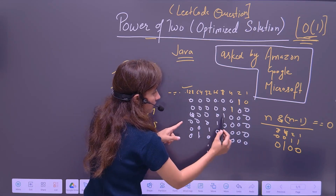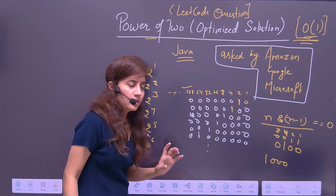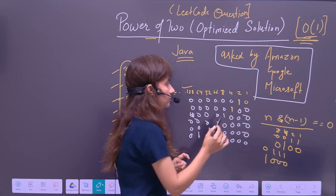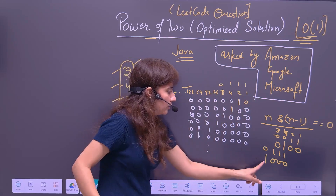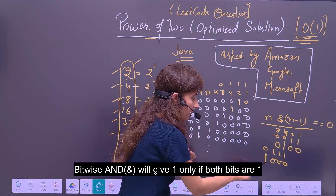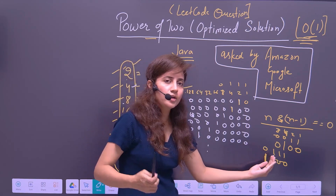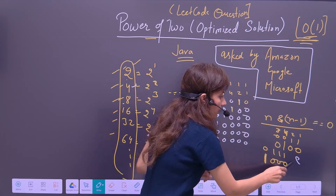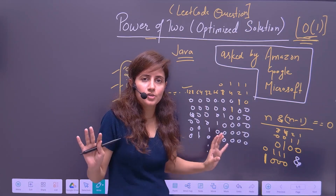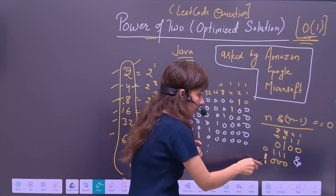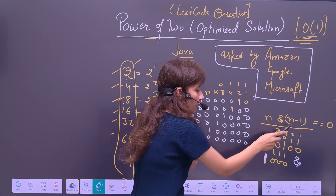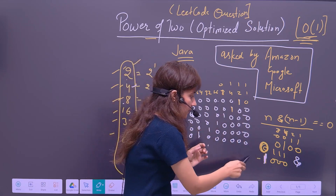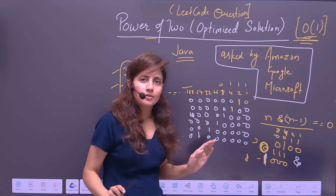Same for 8: 8 in binary is 1000, and 7 in binary is 0111 — 4 plus 2 plus 1 is 7, so bits at those positions are 1, otherwise 0. You will never get a 1 at the higher side; 1s appear only at lower side bits for n minus 1. Since a power-of-two number has only one bit set to 1, performing bitwise AND will definitely give 0.